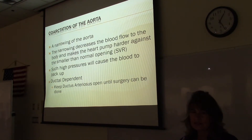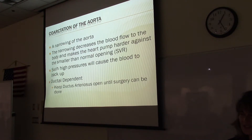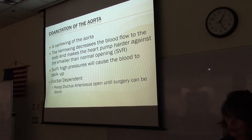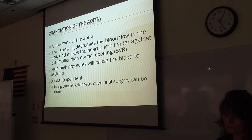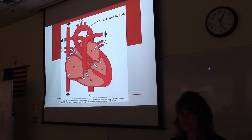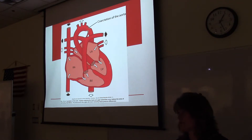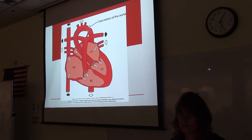The next defect is coarctation of the aorta — a narrowing of the aorta. The narrowing decreases blood flow to the body and makes the heart pump harder against the smaller-than-normal opening, causing an increase in systemic vascular resistance. When the left ventricle contracts and pushes blood into the aorta, it meets very high resistance, making it hard for blood to flow past this point. The left heart becomes enlarged quickly from doing that extra work against the narrowed aorta.